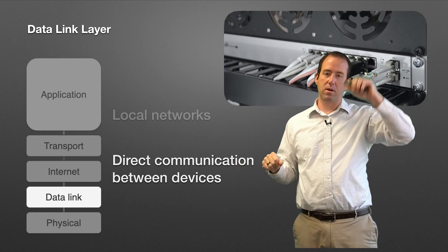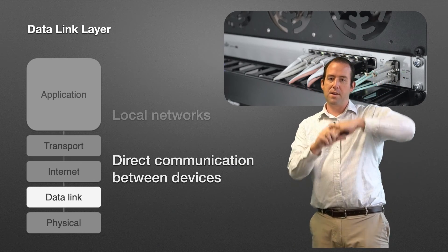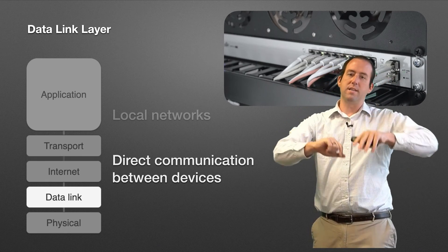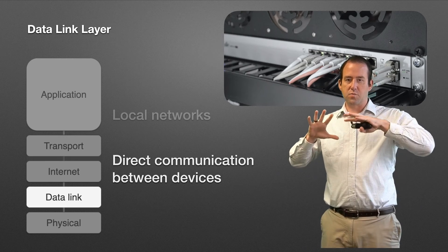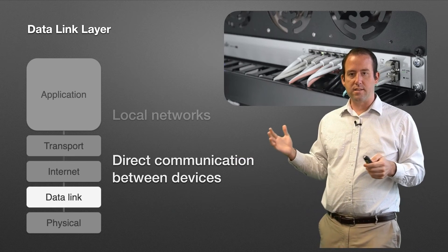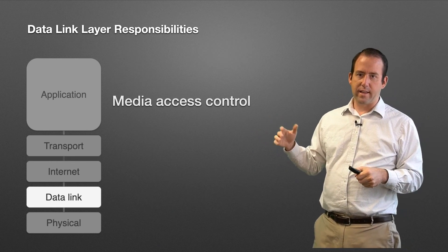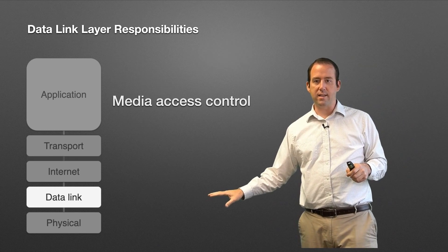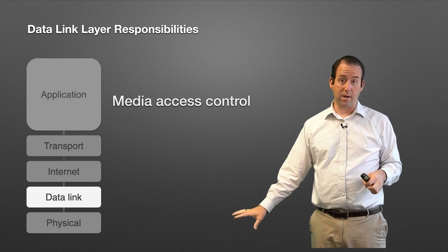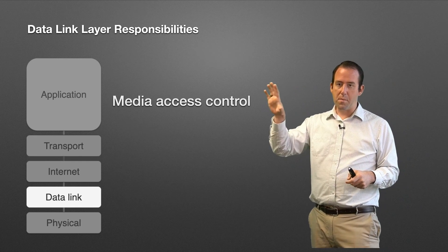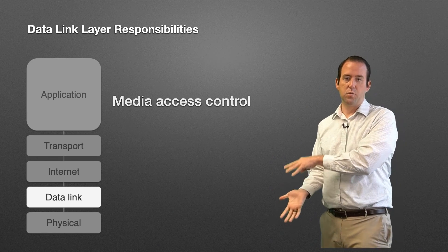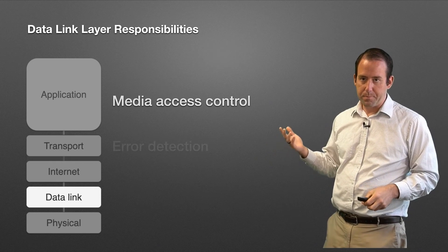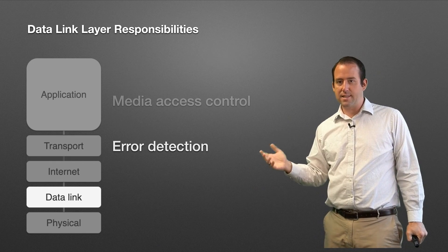With direct connections, if I'm on the same network as the destination computer or server, I don't need to involve IP addresses — I can send that message directly. The data link layer is really concerned about the local network and your local connection to nearby devices. Responsibilities include media access control — managing access to the physical layer medium, whether that's radio frequencies, Ethernet wires, or whatever the physical network is operating on. It also manages error detection, so errors don't propagate everywhere.